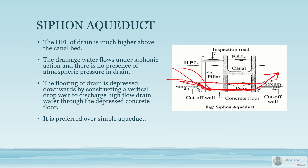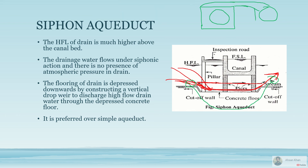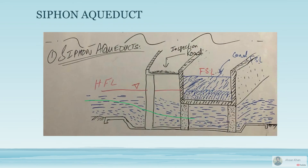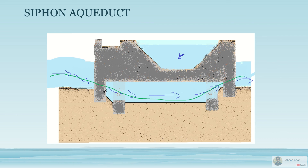In the siphon aqueduct, a sort of pipe structure is created — the water goes into this section, lowers down, and then rushes out with pressure to the other region. This is the siphonic action: the water moves to this region, pressure is created due to the drop in height, and it rushes out from the other end. This effect can also be provided using pipes — in canals, large reinforced concrete pipes are inserted underground and the water passes through them to the other end.